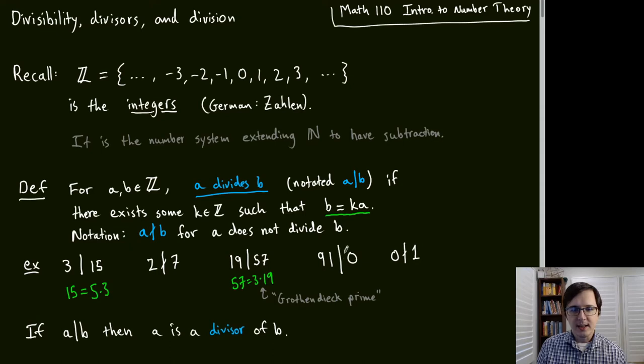Another counterintuitive fact: every number divides 0. For example, 0 = 0 × 91, so setting K = 0 shows that 91 divides 0.